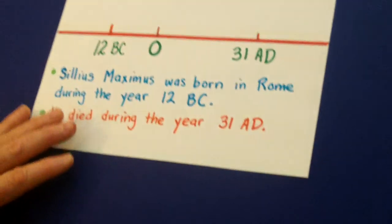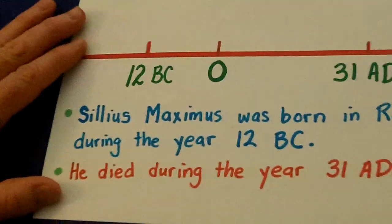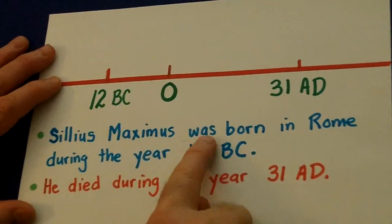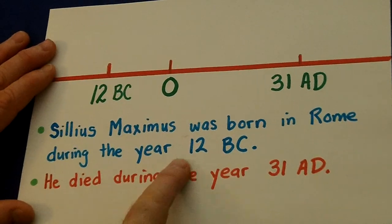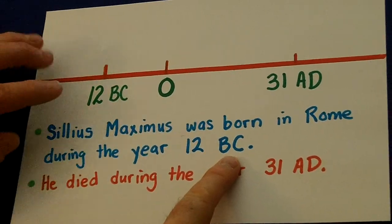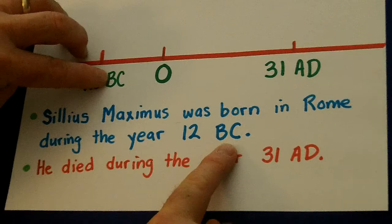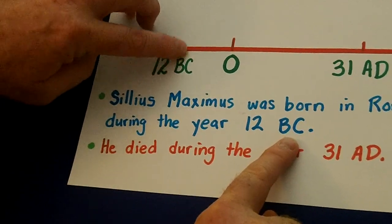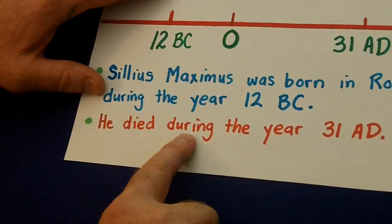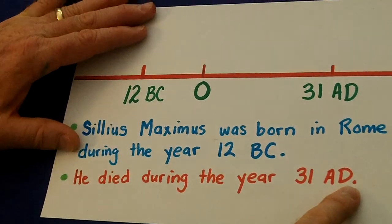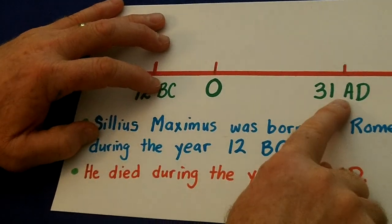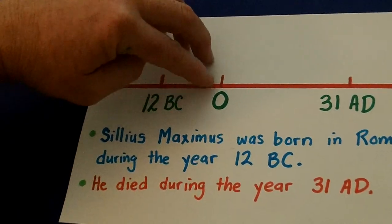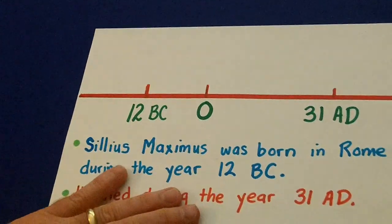Last one. There was a certain Roman, Cilius Maximus, who was born in Rome during the year 12 BC. Now here's the year zero. BC is before zero. So he was born in 12 BC. Now he died during the year 31 AD. B means before, A means after. So he died 31 AD.